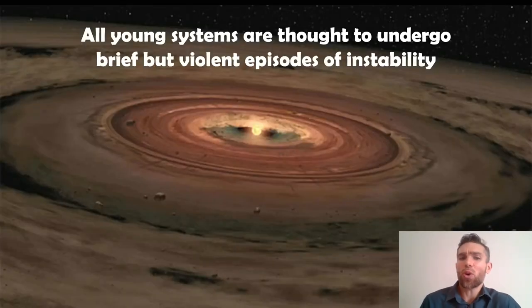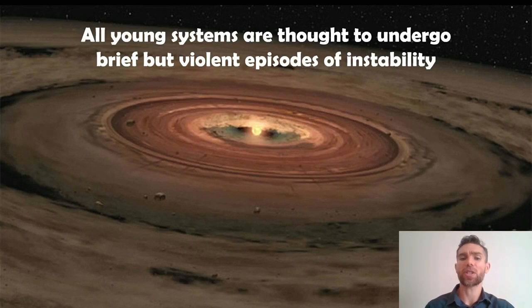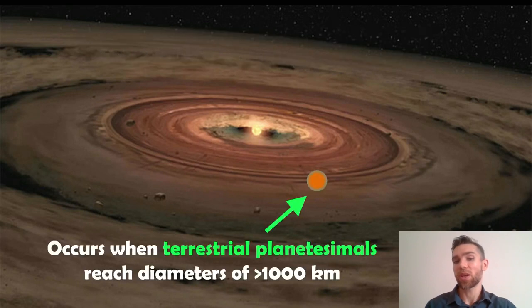But also it's thought that young systems, so these are systems that are newly formed, maybe even still forming planets, that they will undergo brief violent episodes of instability. Now why does that occur? Well during the formation process you have these discs of material where planets are still forming from, they're still growing from them. You've got smaller objects in there as well. So it's a collection of all different range of sizes.